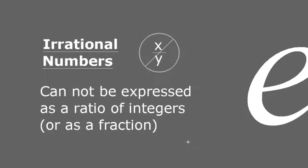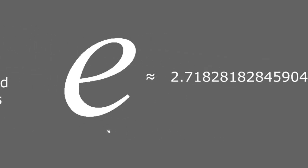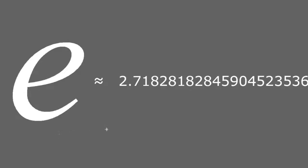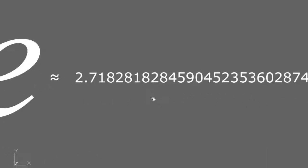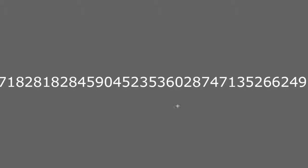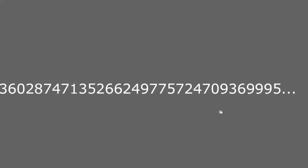As we said before, you cannot express an irrational number as a fraction or a ratio of integers. One characteristic found in all irrational numbers is that when you try to write them in decimal form, you will see an infinite number of digits after the decimal point. The difference from recurring decimals is that recurring decimals follow a pattern — either a single number or a set of numbers repeating infinitely. However, in irrational numbers, there is no pattern you can find among all of the digits after the decimal point.